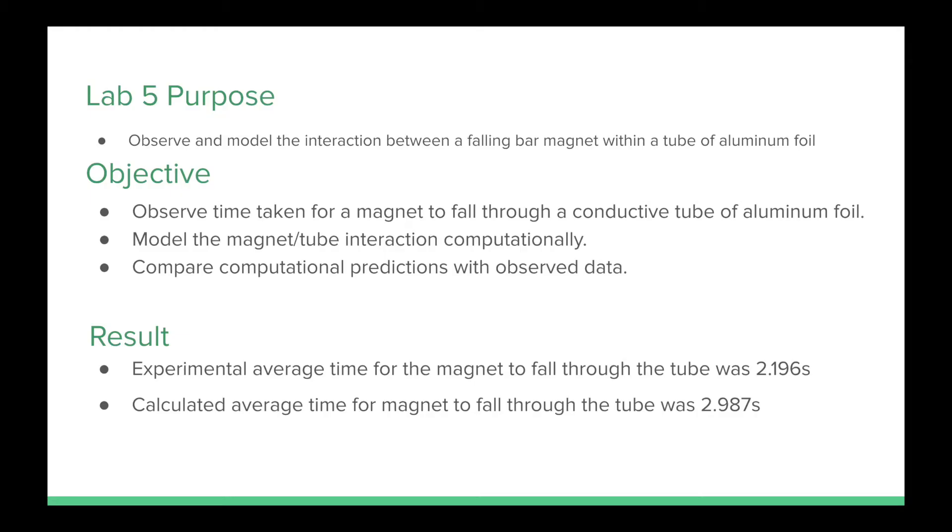The main purpose of Lab 5 was to observe and model the interaction between a falling bar magnet within a tube of aluminum foil.